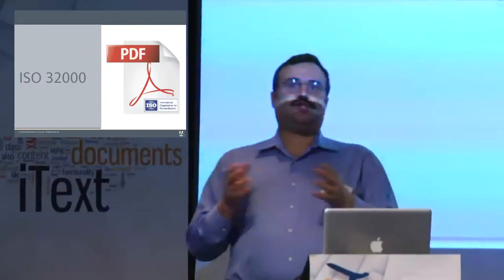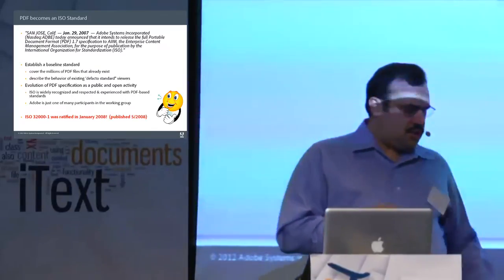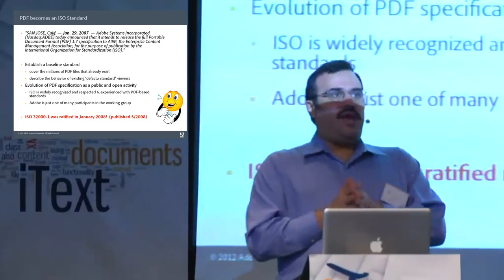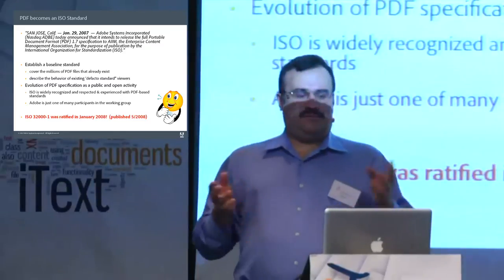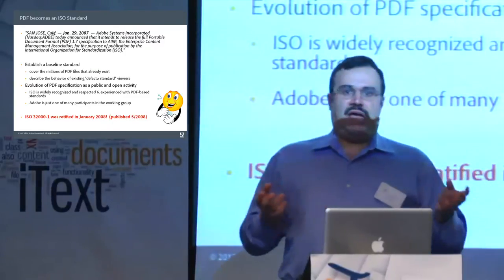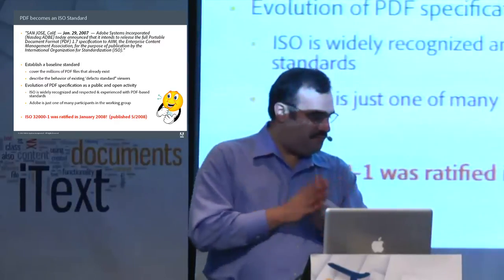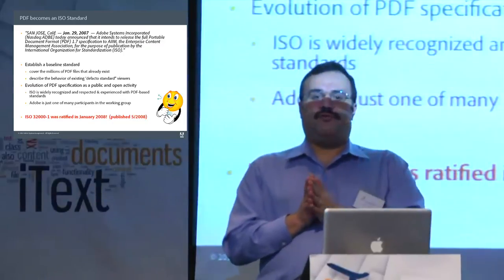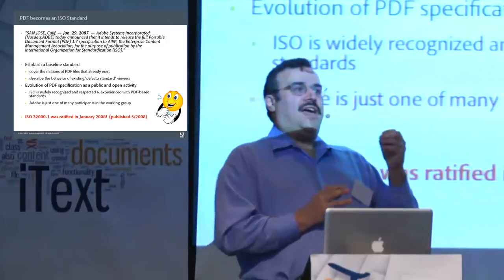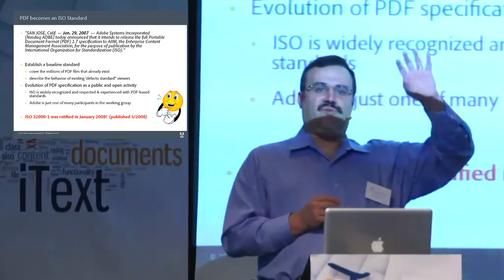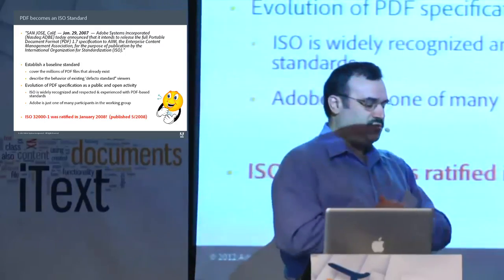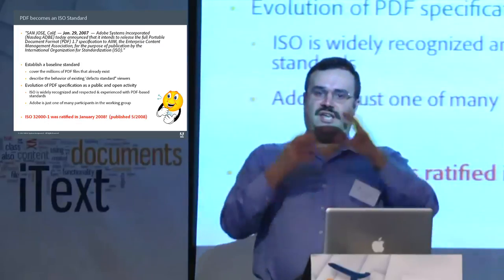Now let's talk about PDF proper. In 2007, Adobe announced we were turning over the PDF standard from our control to the ISO. Within a little over a year, in May 2008, the ISO published ISO 32000-1. We don't talk about the Adobe PDF specifications anymore — this is the international standard. It wasn't just taking the Adobe document and signing off on it. We wanted a document that reflected how ISO and international standards work, with three pillars: preserving existing documents, defining viewer rules, and making it a proper ISO standard.